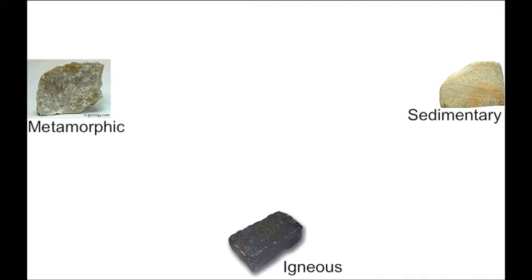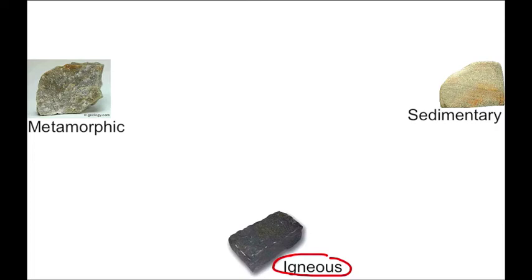Let's start out the rock cycle by taking a look at an igneous rock. It actually happens to be basalt. The igneous rock formed from magma or lava over time is going to experience erosion and weathering, and those particles from the igneous rock could become sedimentary.